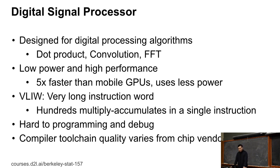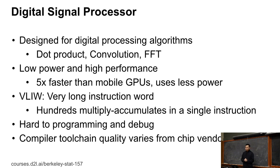The biggest advantage is that it uses less power, which means if you run something on your mobile phone, you don't want it to get too hot. So you want to save power — if you run deep learning algorithms on DSPs instead of GPUs or CPUs, you can run much more on battery.